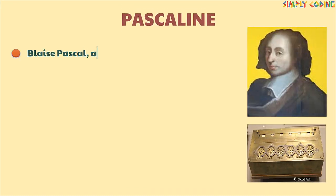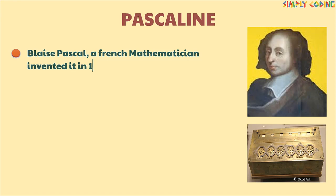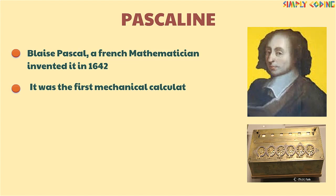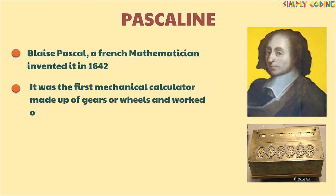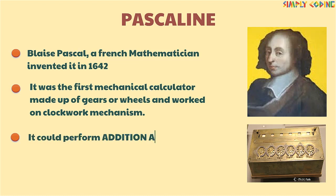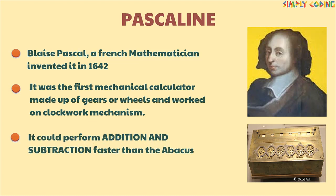Then came Pascaline. Blaise Pascal, a French mathematician, invented it in 1642. It was the first mechanical calculator made up of gears or wheels and worked on a clockwork mechanism. It could perform addition and subtraction faster than the Abacus.